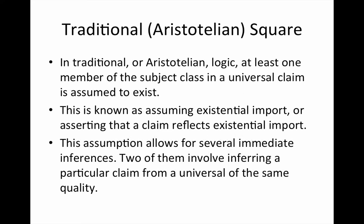First, let's remind ourselves that when we study the traditional or Aristotelian square of opposition, we operate under the assumption of existential import. In other words, we operate under the assumption that at least one member of the subject class in a universal claim is assumed to exist. We don't need to make this assumption for a particular claim, because a particular claim just makes an existential assertion.